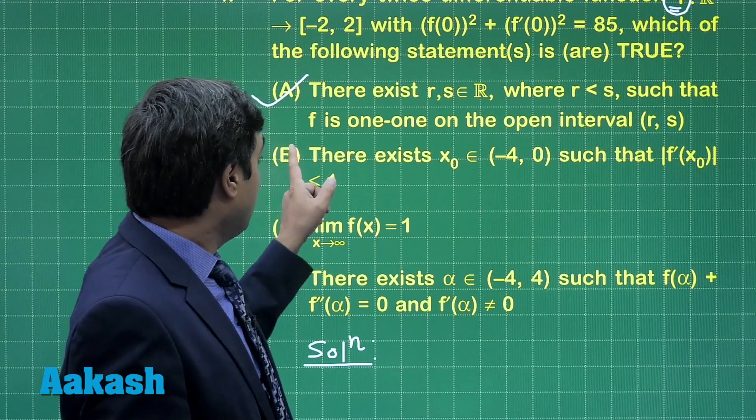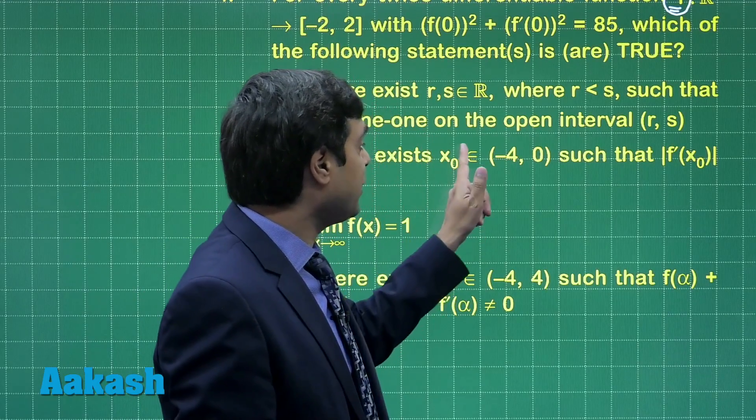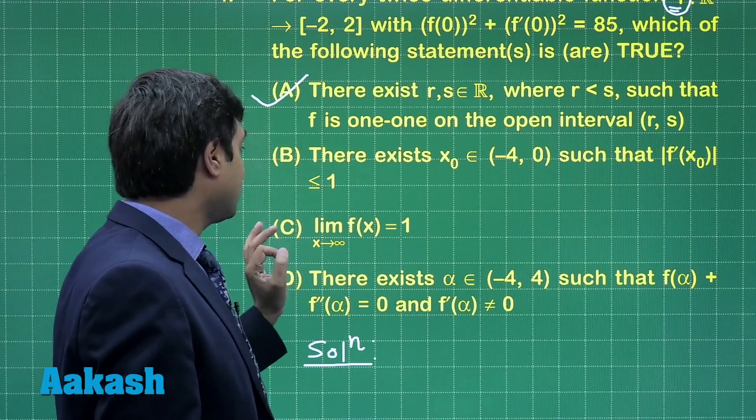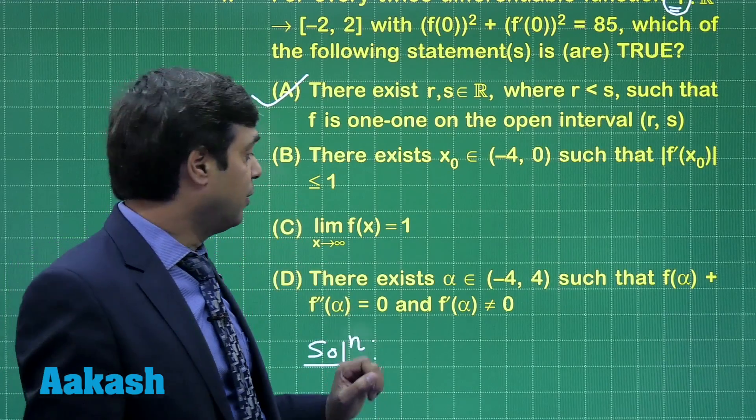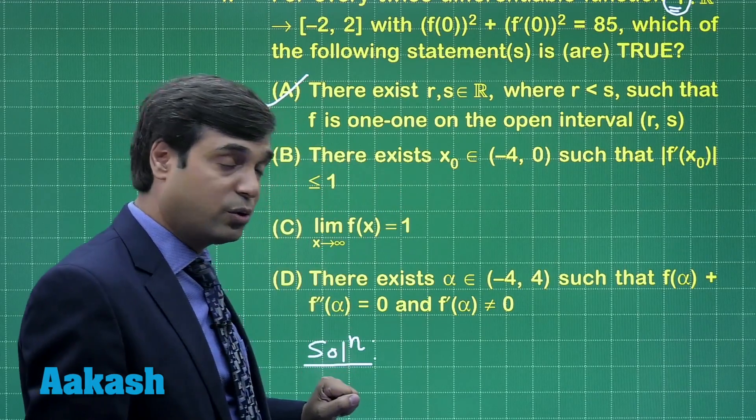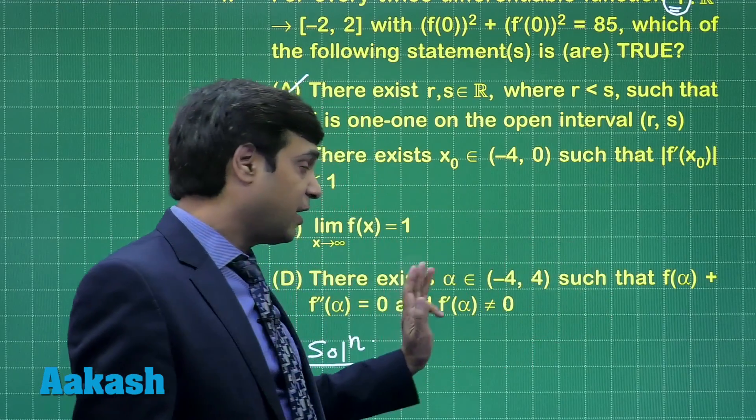Let us go for second option which says there exist x₀ in the interval minus 4 to 0 such that mod f'(x₀) is less than equal to 1. Third one says limit x approaching to infinity f(x) is equal to 1. Fourth one is about f(α) plus f''(α) equals 0.